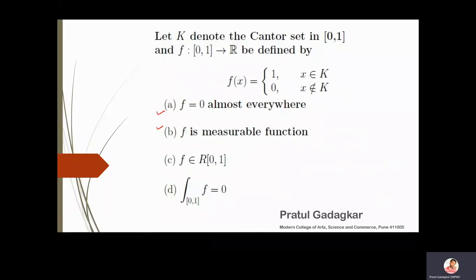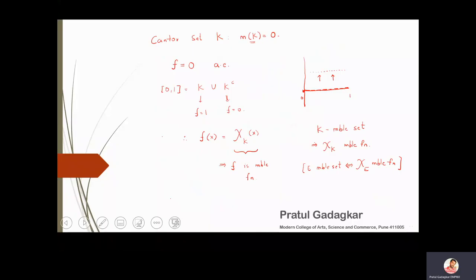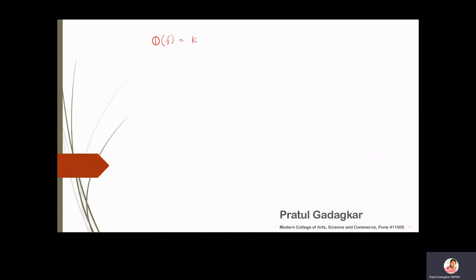Looking at the graph of the function: f is 0 almost everywhere but discontinuous at points on the Cantor set. It is a bounded function since it lies between 0 and 1. The set of discontinuities D(f) is exactly the Cantor set K, and the measure of these discontinuities equals the measure of K, which is 0. By the Lebesgue criterion for Riemann integrability, a function with discontinuities of measure zero is Riemann integrable.